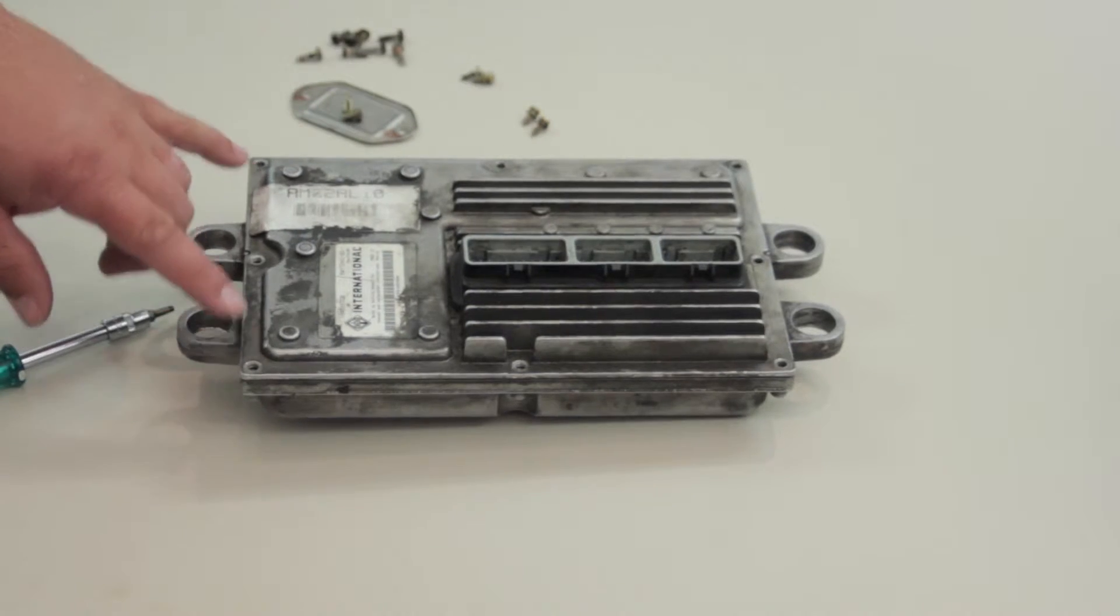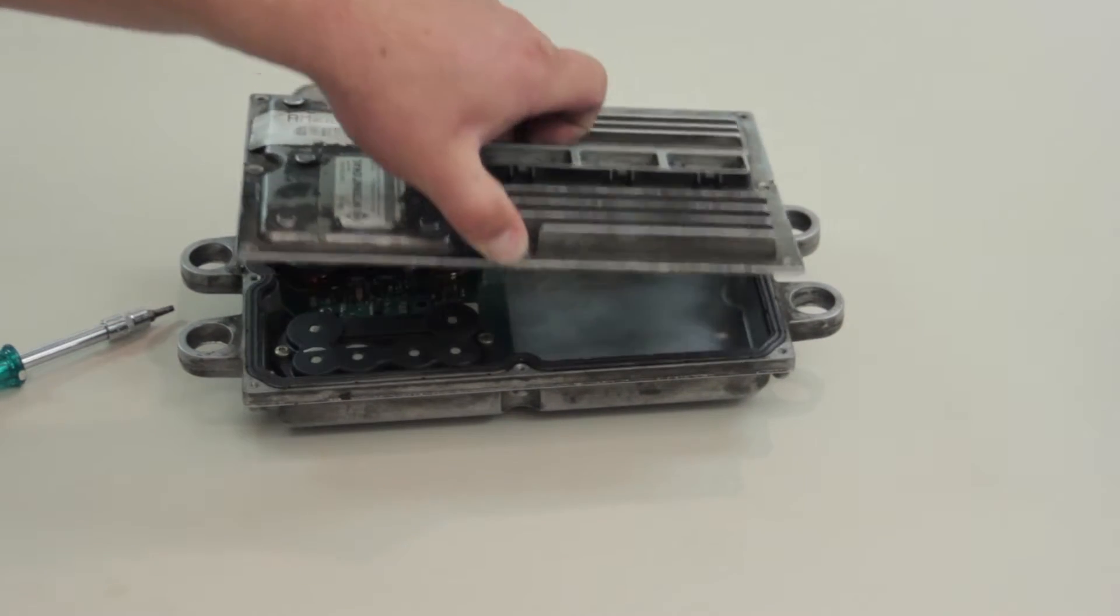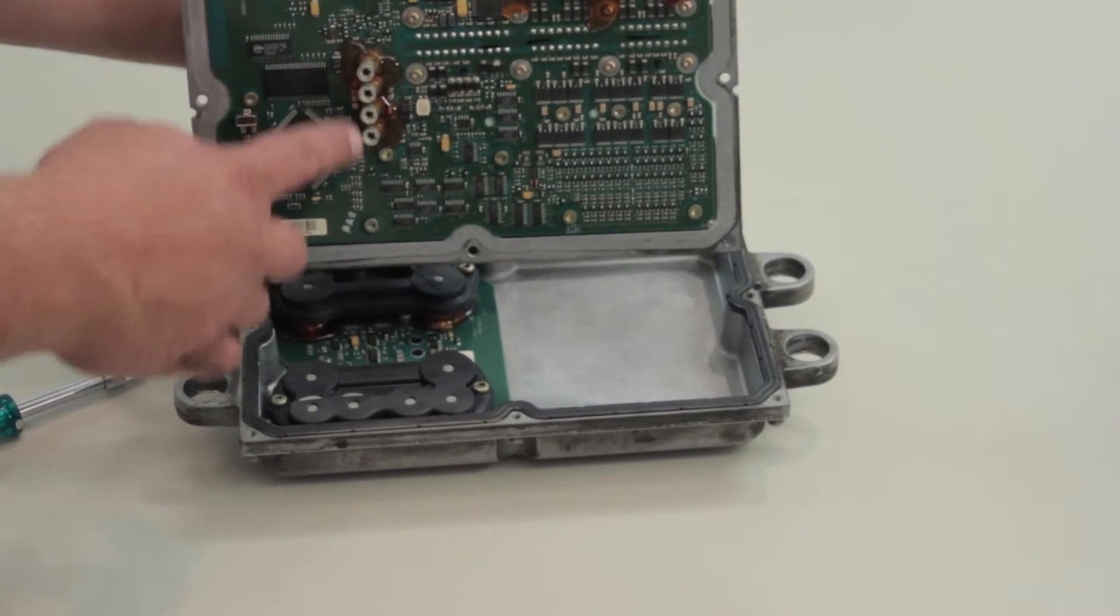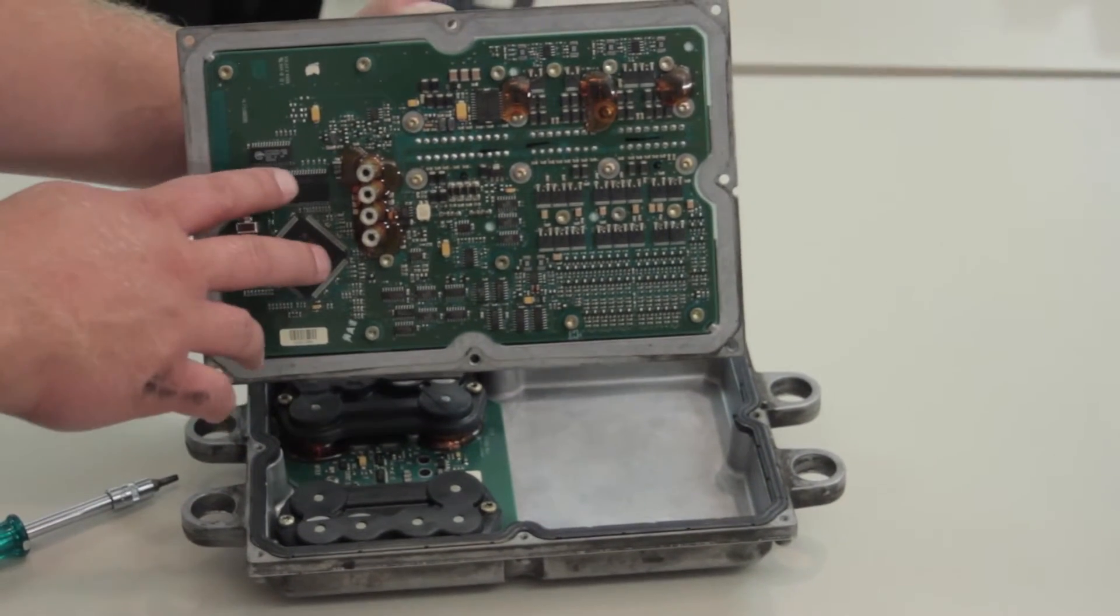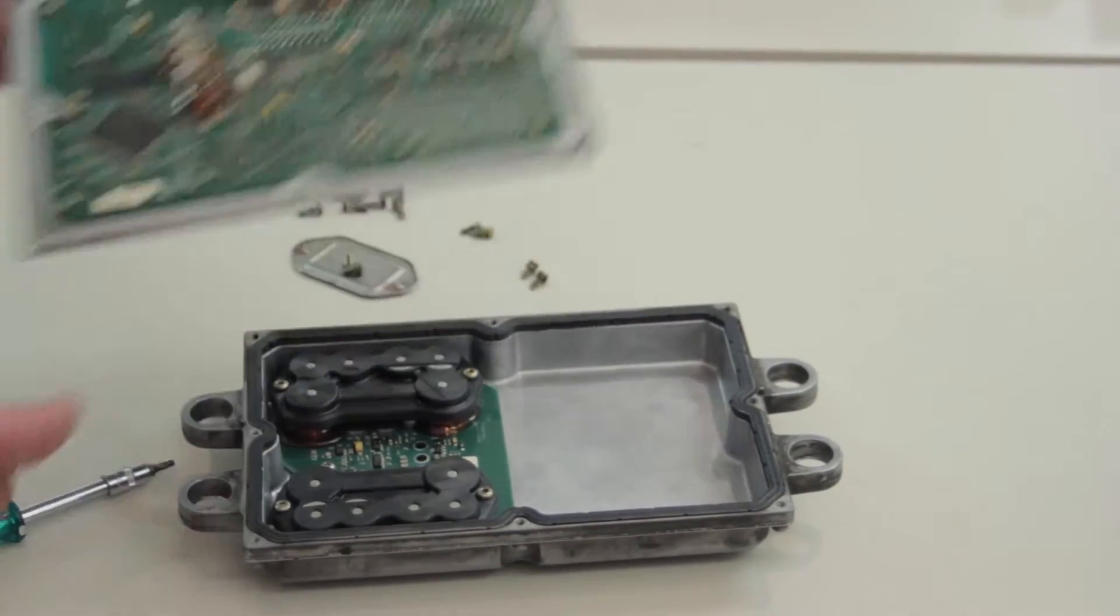Now I've gone ahead and removed all eight screws holding the two halves together, we can separate them. And you'll see as I lift the top part off this is where those four screws came out of earlier. You'll see all of our control module or chips on this half of the board.